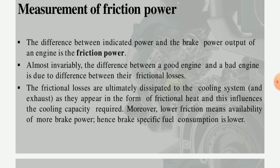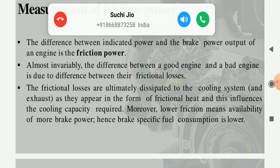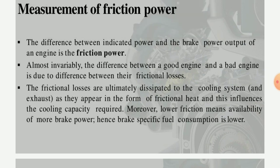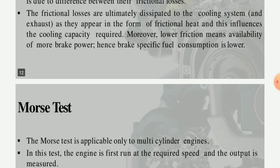In the total braking system, how can the measurement of friction power be calculated? The difference between the indicated power and the brake power output of the engine is the frictional power. Almost invariably, the difference between a good engine and a bad engine is due to the difference in frictional losses. The frictional losses are ultimately dissipated to the cooling system and exhaust as frictional heat, which influences the cooling capacity — lower friction means more brake power availability, and hence the brake specific fuel consumption is low.